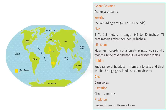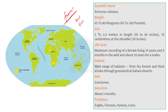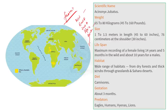Cheetahs are the fastest mammal on land, reaching up to 64 miles per hour in just 3 seconds. There are 5 subspecies: Northwest African, East African, South African, Northeast African and Asiatic Cheetahs. All are listed as vulnerable by IUCN except the Northwest African and Asiatic Cheetah, which are critically endangered. The Asiatic Cheetah population in India was declared extinct in 1952. Project Cheetah introduces African Cheetahs, chosen for their genetic similarity to Asiatic Cheetahs.